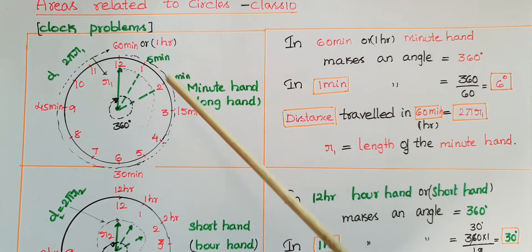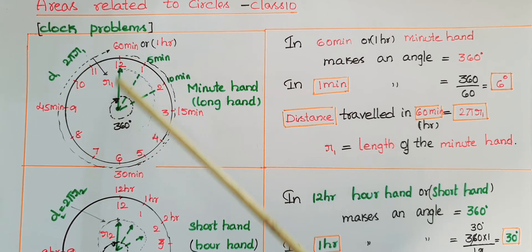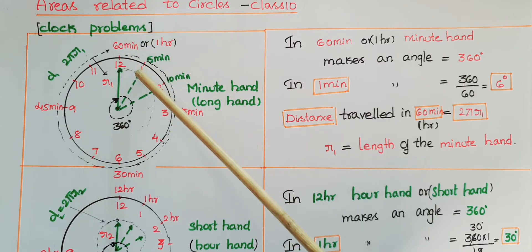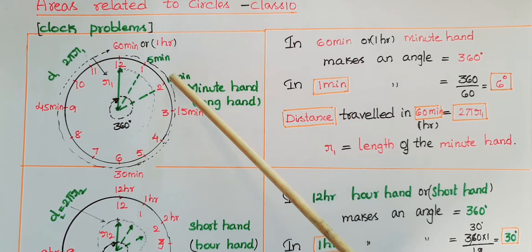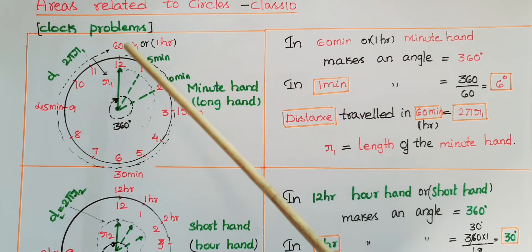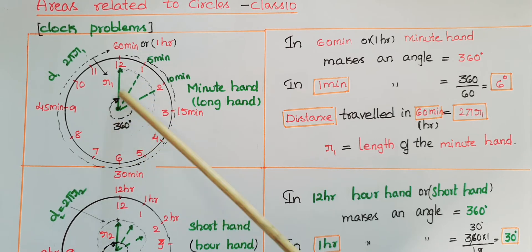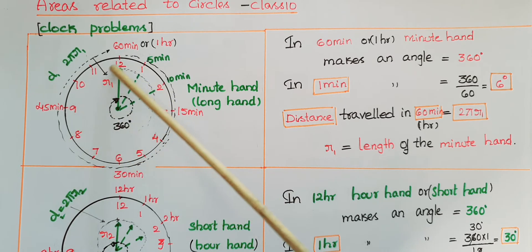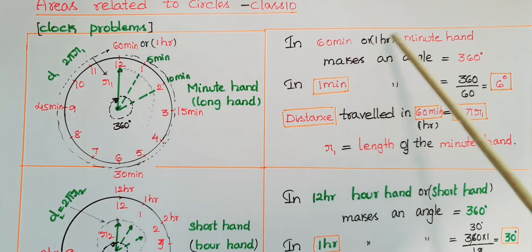You can see here this is a clock. In a clock there are 12 numbers. This is the minute hand and the length of the minute hand is r1. If the minute hand reaches 1, it takes 5 minutes; if it reaches 2, it takes 10 minutes; if it reaches 12 it takes 60 minutes or 1 hour. So in 60 minutes or 1 hour, the minute hand makes an angle of 360 degrees, and the distance traveled by the minute hand is the circumference of the circle, that is 2πr1.